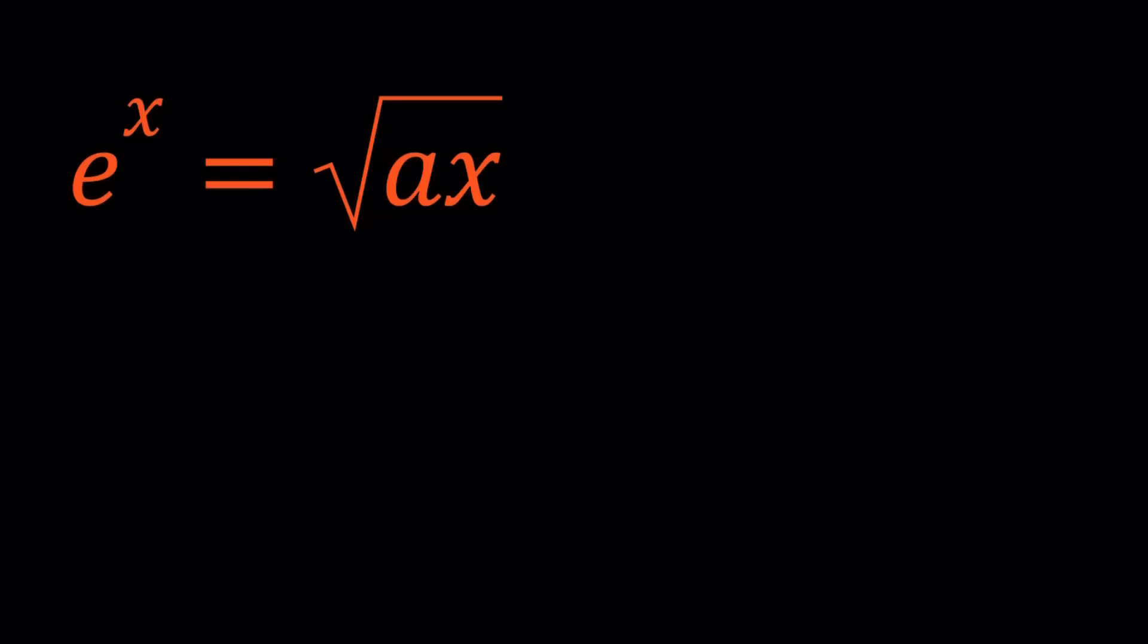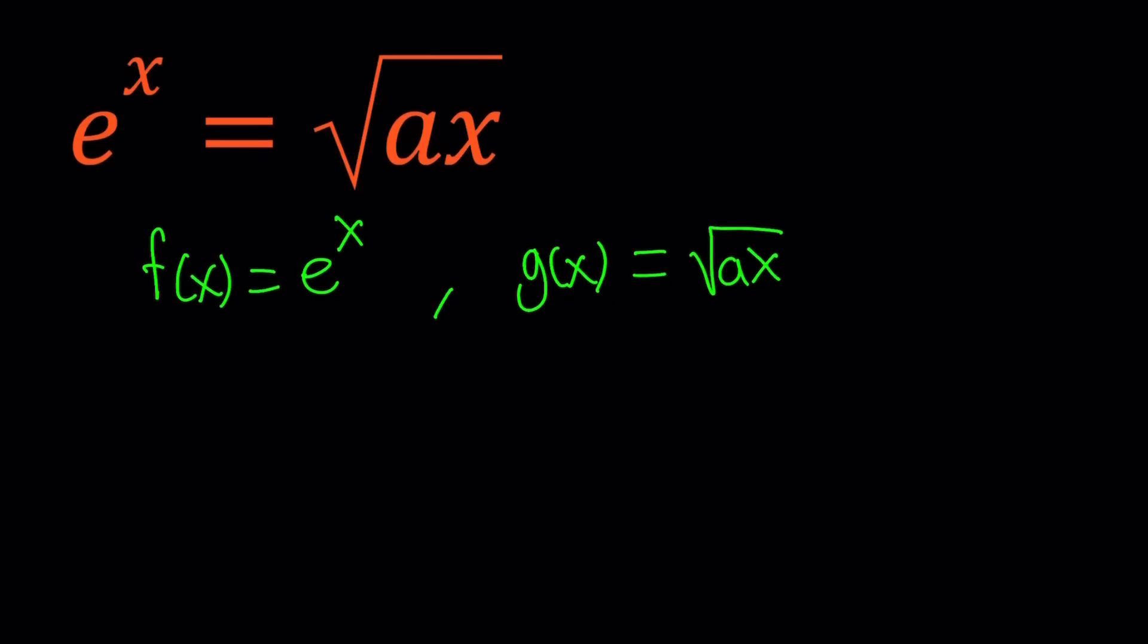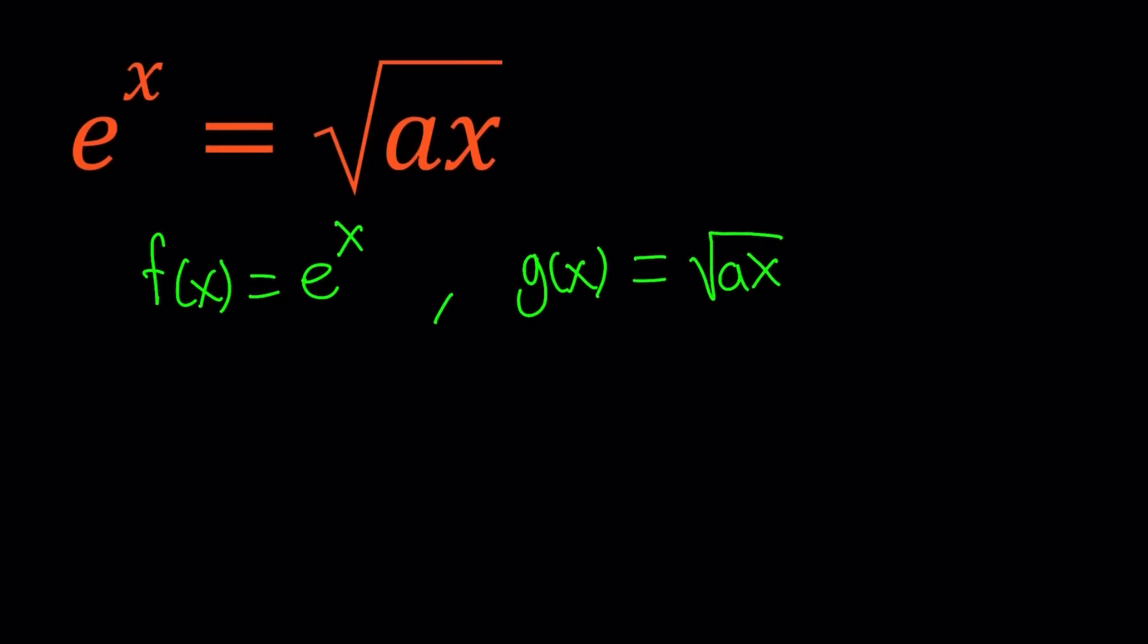Let's go ahead and define f of x as e to the power x and g of x as square root of ax. Obviously, we also want to know the value of a for which these two curves are tangent. So let's go ahead and start with that one. If these two curves are tangent at, let's say, tangent at x equals r,